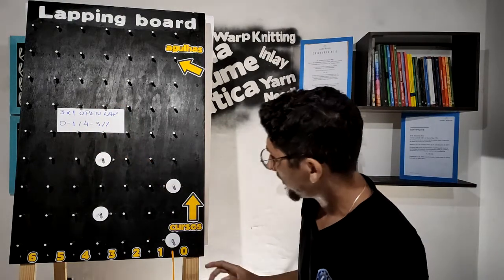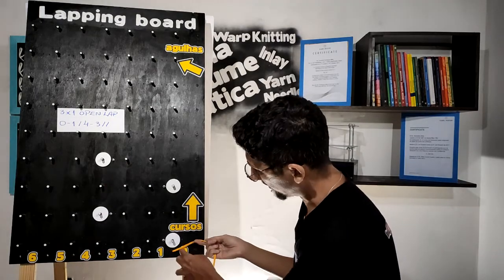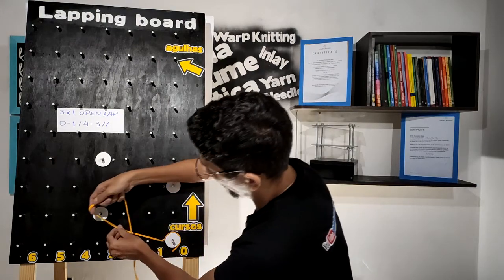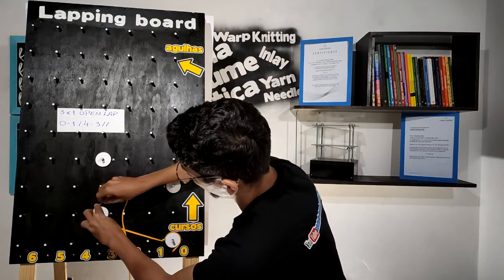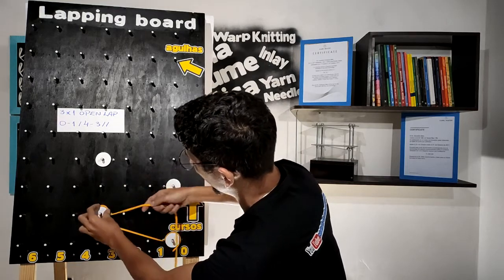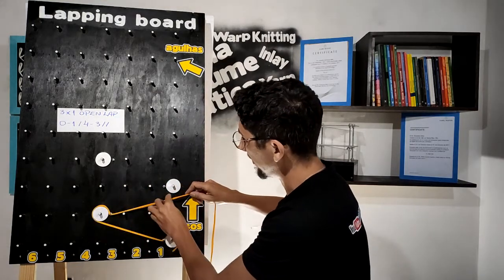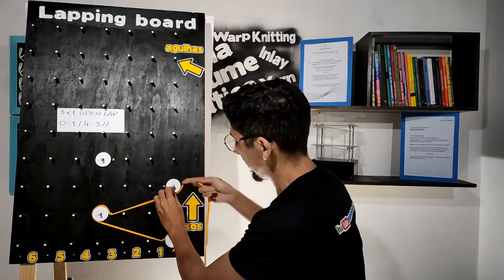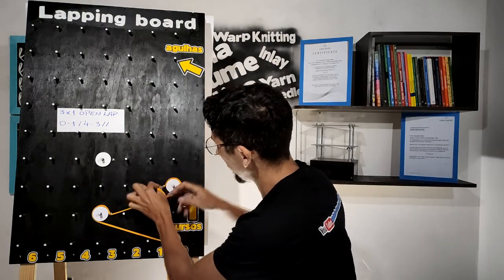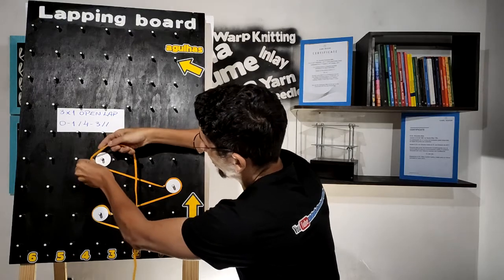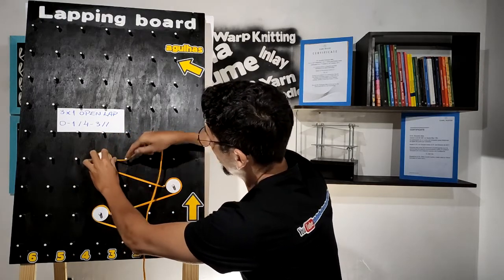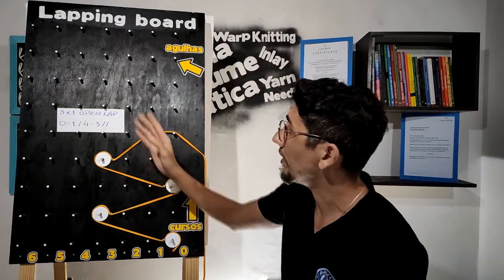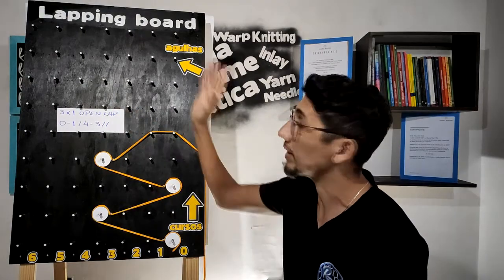We need to go first on zero, after that one, and now four-three. This is the repeat. I'm going to make it on the next needle again: zero-one, four-three. This is the representation of the three-by-one open lap on the lapping board.